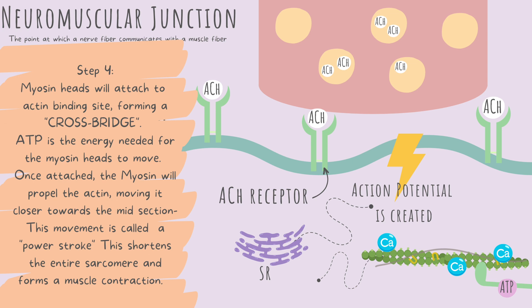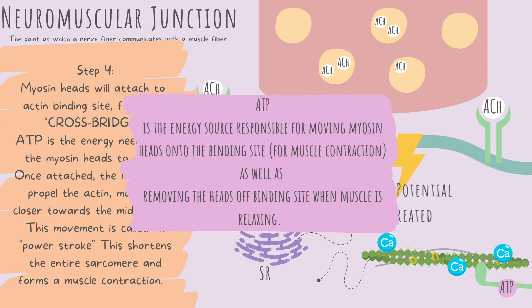Step four: myosin heads will attach to actin binding sites, forming cross bridges. ATP is the energy source responsible for moving the myosin heads. That includes moving them onto the binding sites when contraction is needed, as well as removing them from the binding sites when muscles need to relax. So when a muscle needs to contract, ATP will swoop in and move the myosin heads onto the binding sites. Then when the muscle is ready to relax, ATP will again give the myosin heads energy to latch off of the binding sites.